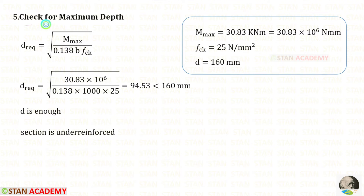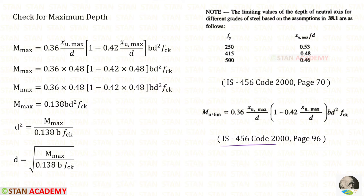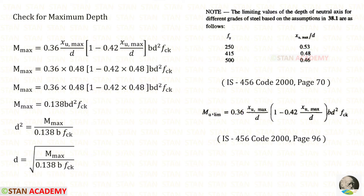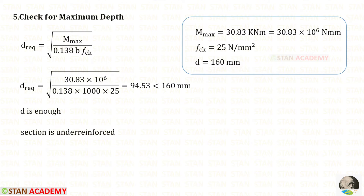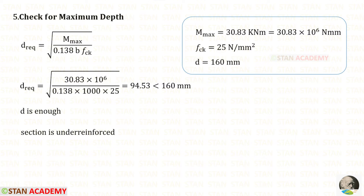Now we are going to apply the check for the maximum depth. From code book page number 96 we apply the formula using xu_max upon d. That value from page number 70 for Fy 415 is 0.48. We convert the moment of 30.83 kilo Newton meter to Newton millimeter by multiplying by 10 to the power 6. With FCK of 25 and breadth B of 1000 millimeter, the required depth works out to 94.53 millimeter. Our effective depth of 160 millimeter is more than that, so this effective depth is enough and the section will be under-reinforced.